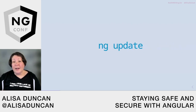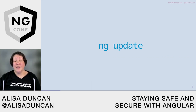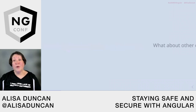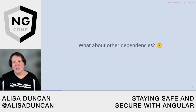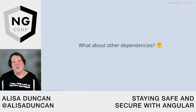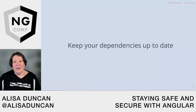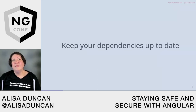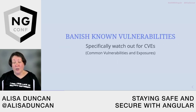Luckily, Angular CLI has the `ng update` command — a handy tool for running updates on Angular core libraries and any libraries within the Angular ecosystem that have update schematics. But what about other dependencies? Our complex applications have much more than just Angular. We need to keep all dependencies up to date, but specifically we want to handle known vulnerabilities — CVEs, or Common Vulnerabilities and Exposures — and make sure we take a fix for a dependency when one occurs.